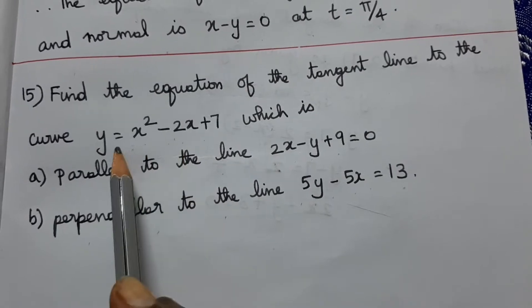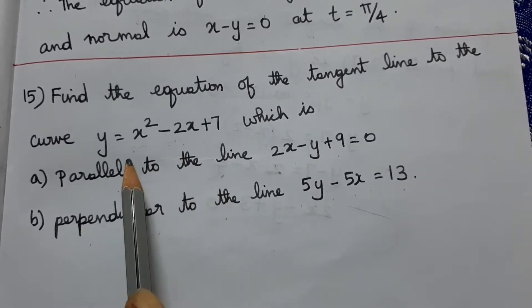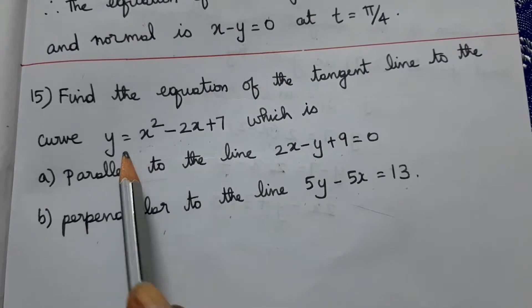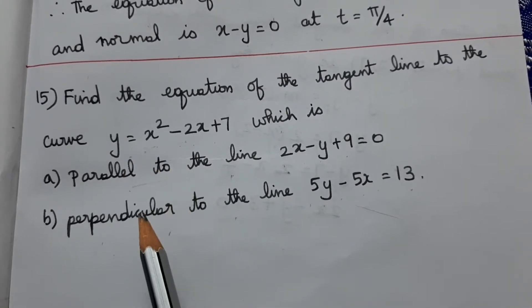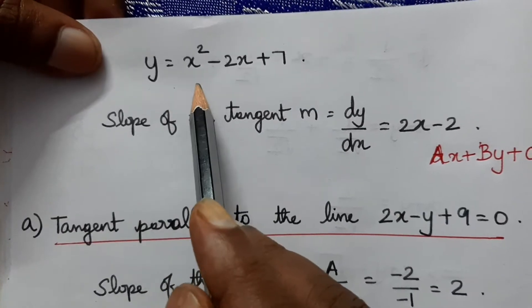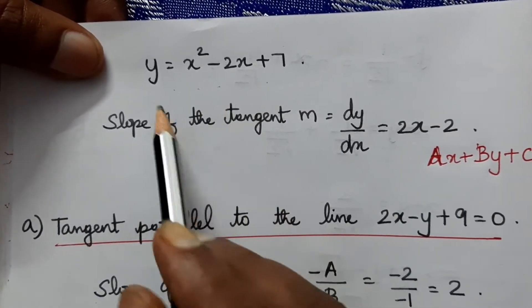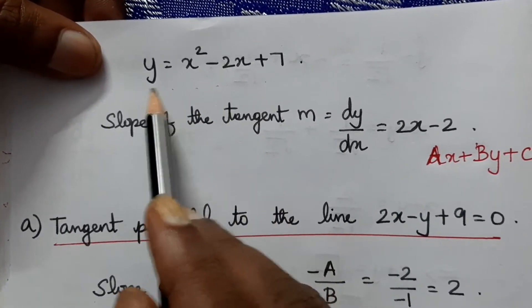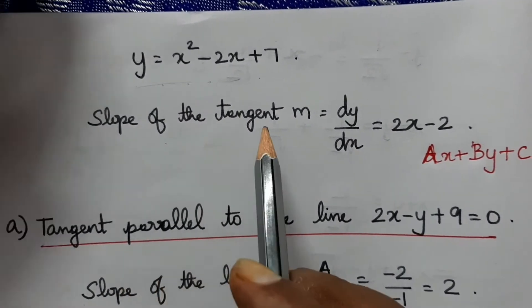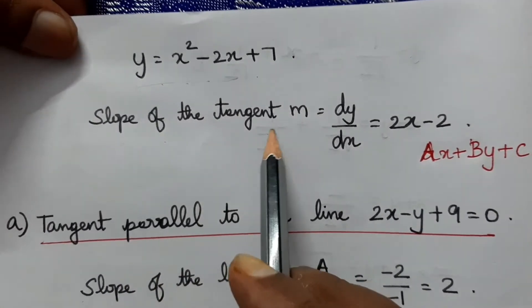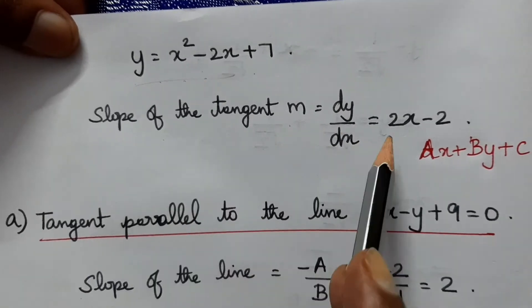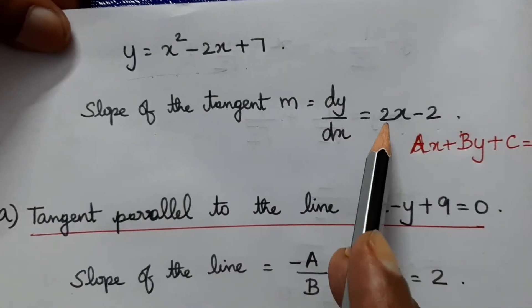We have two conditions: the tangent parallel to the line, and the tangent perpendicular to the line. For the curve y = x² - 2x + 7, the slope of the tangent equals the slope of the curve, which is dy/dx = 2x - 2.